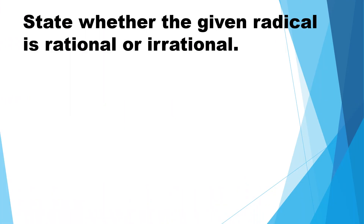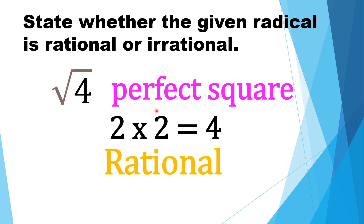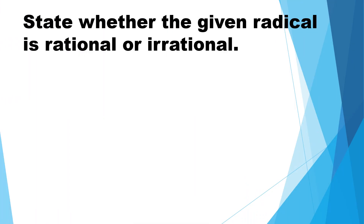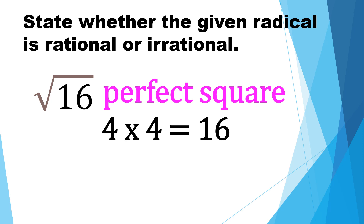In this activity, we are going to state whether the given radical is rational or irrational. Square root of 4: 4 is a perfect square since 2 times 2 is equal to 4. If the radicand is a perfect square, the radical is rational. Square root of 16: 16 is a perfect square since 4 times 4 is equal to 16. Thus, square root of 16 is rational.